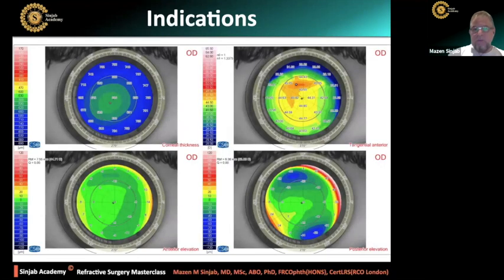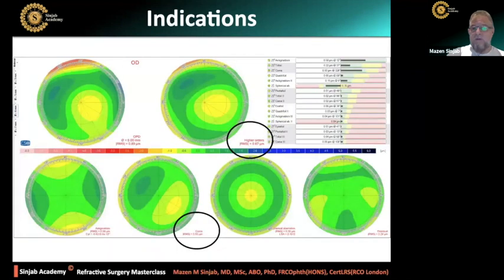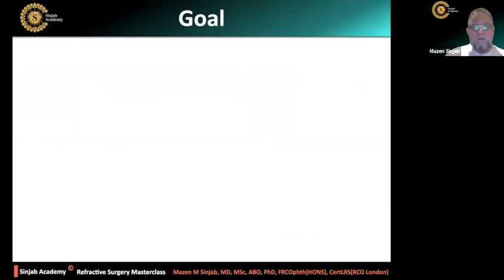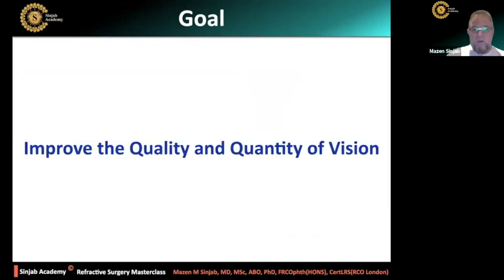This is an example where the patient has some irregularities on the cornea, and these irregularities are causing higher-order aberrations, especially coma, and affecting the PSF and the MTF. The aim of customized laser vision correction is to improve the quality and quantity of vision.